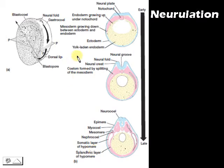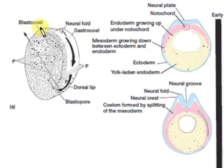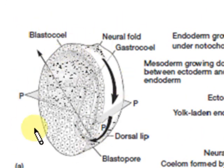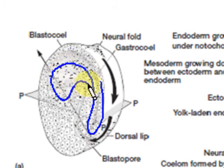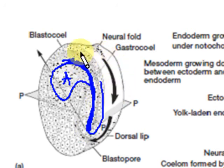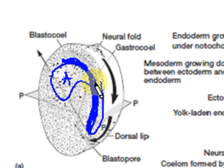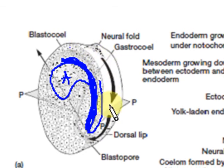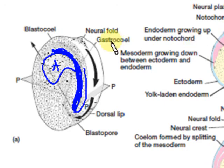After gastrulation, you now have neurulation — the formation of the nervous system. Taking a sagittal view, you can see the archenteron. The cells here will be your future mesoderm. The cells that have moved inside are called the chorda mesoderm, or cordo mesoderm, because they will eventually become the notochord. The cells above that begin to thicken and flatten, eventually forming the neural plate.